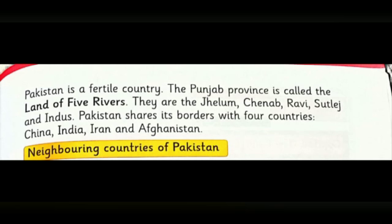Pakistan shares its border with four countries — Pakistan ki sarhadein chaar mumalik ke saath milti hain. Aur wo kaun kaun se mumalik hain? China, India, Iran, and Afghanistan. Aap sabne in donon pages ko achhi tarah se read karna hai aur keywords ke jo meanings hain wo apne notebook pe likhne hain.